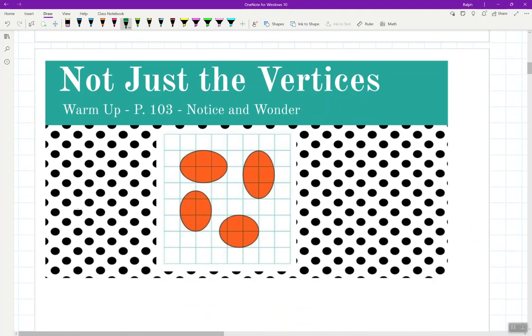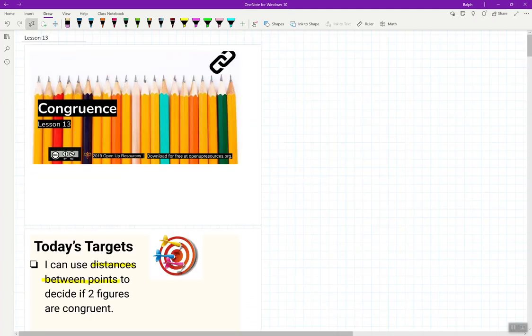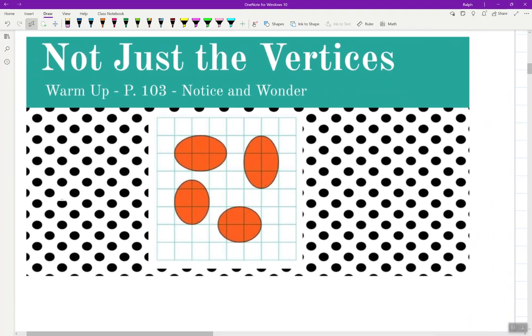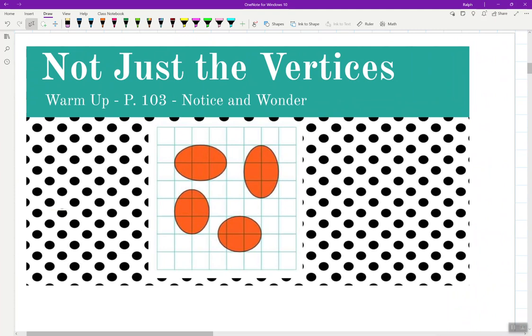So to start us off, start off with a notice and wondering. On page 103, you'll notice there are a bunch of shapes. Take a moment to figure out or write down what you notice and what you wonder. Let's say about two minutes or so. Please go ahead and pause the lesson video at this point and resume it once it seems like the class has completed this first part of the warm-up.